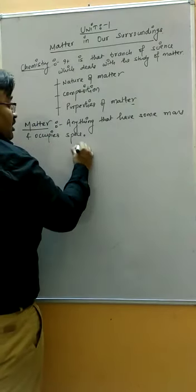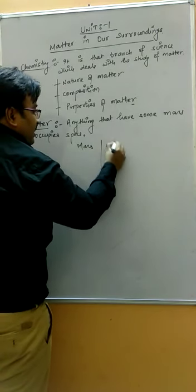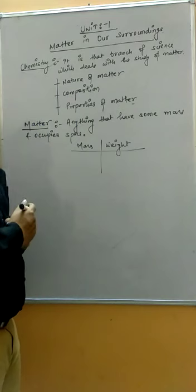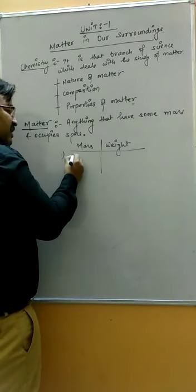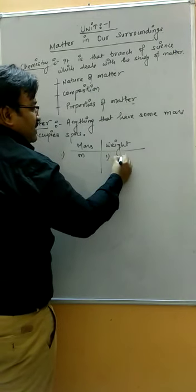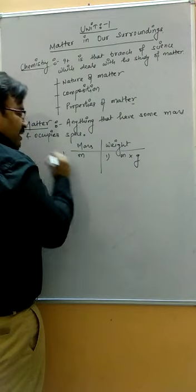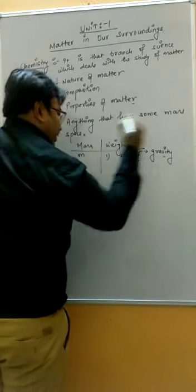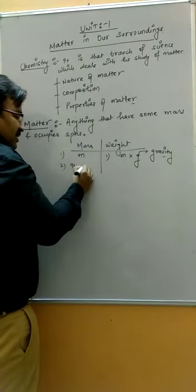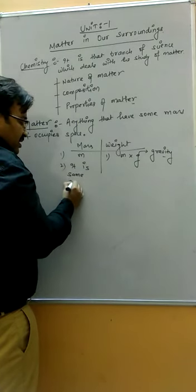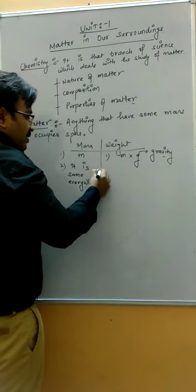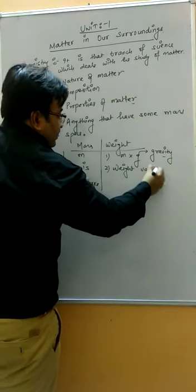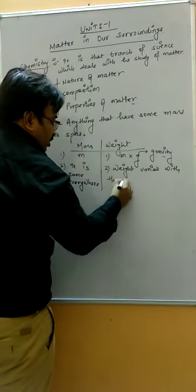Now you heard two words: one is mass and another is weight. What is the difference between mass and weight? Mass is represented by M, and weight is represented by W = Mg, where g represents acceleration due to gravity. The mass remains the same everywhere, but weight varies with position or location.